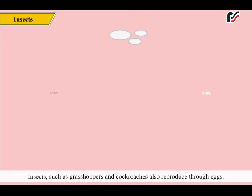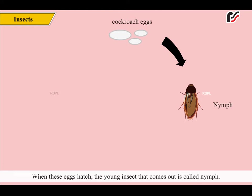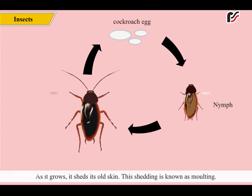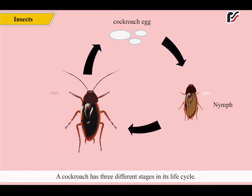Insects such as grasshoppers and cockroaches also reproduce through eggs. When these eggs hatch, the young insect that comes out is called a nymph. As it grows, it sheds its old skin. This shedding is known as molting. After molting several times, a nymph becomes an adult and resembles the parents. A cockroach has three different stages in its life cycle.